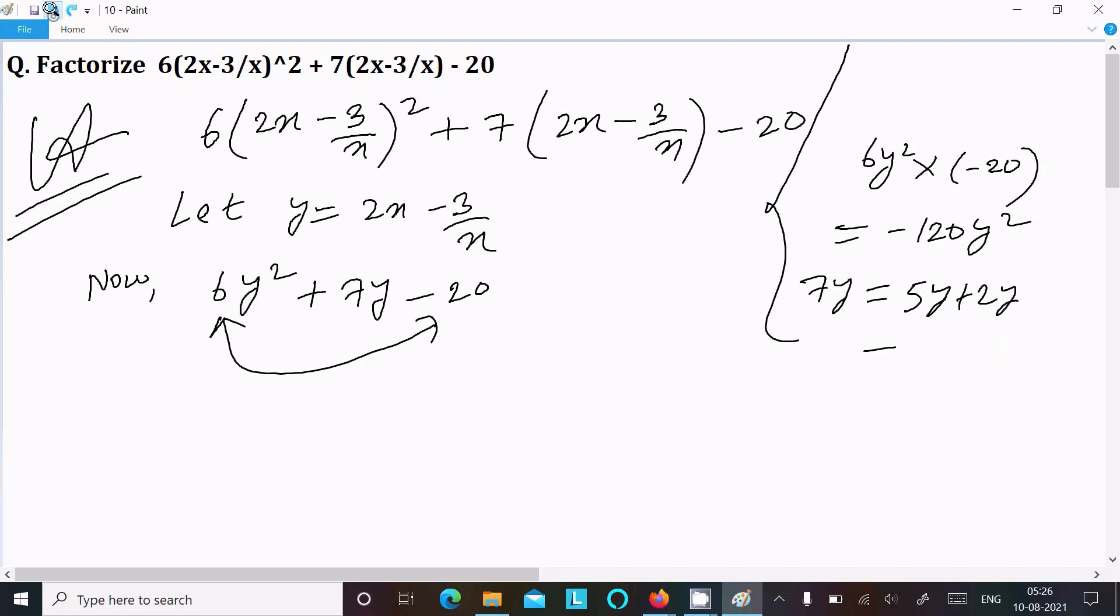After that, in place of 7y we can write 15y - 8y. So if you subtract it equals 7y, and if I multiply 15y into -8y it equals -120y². So these two match, so we can take this combination.